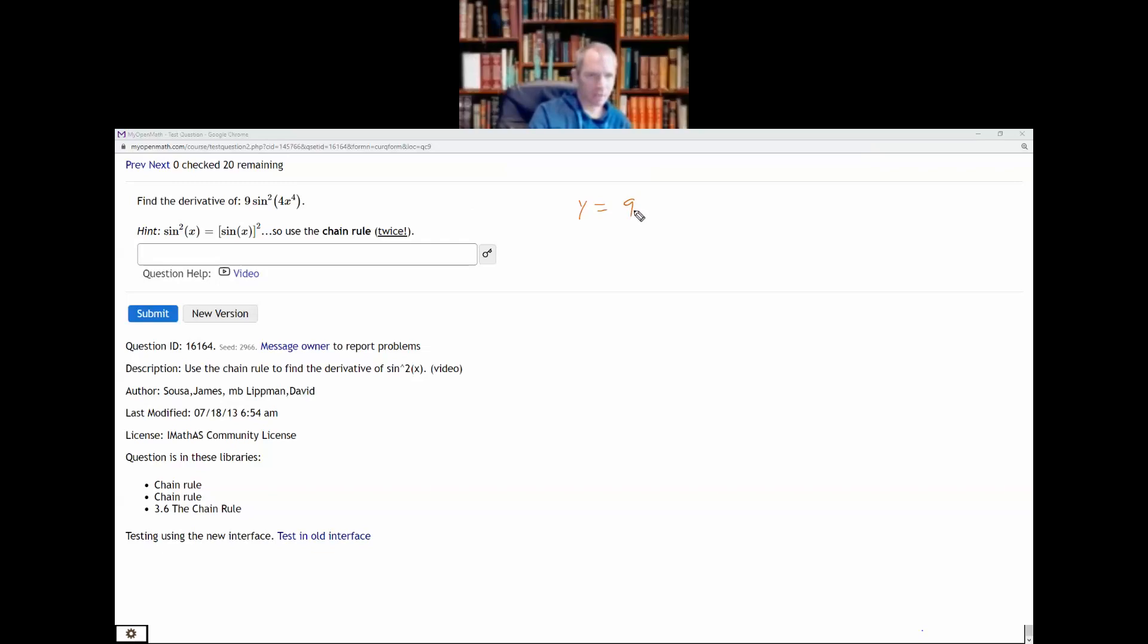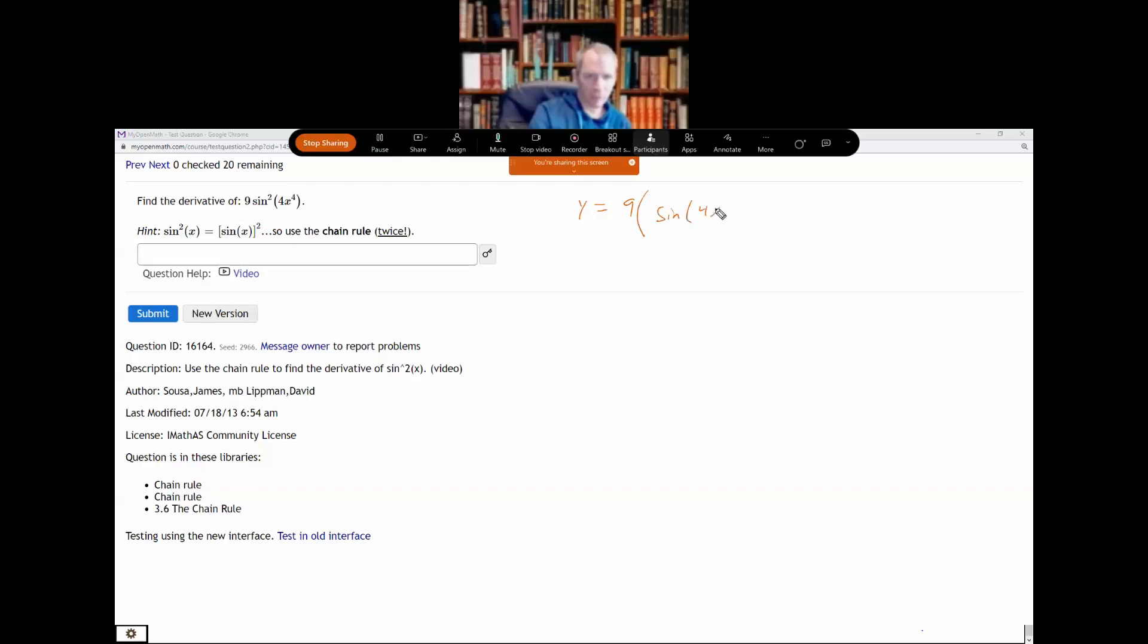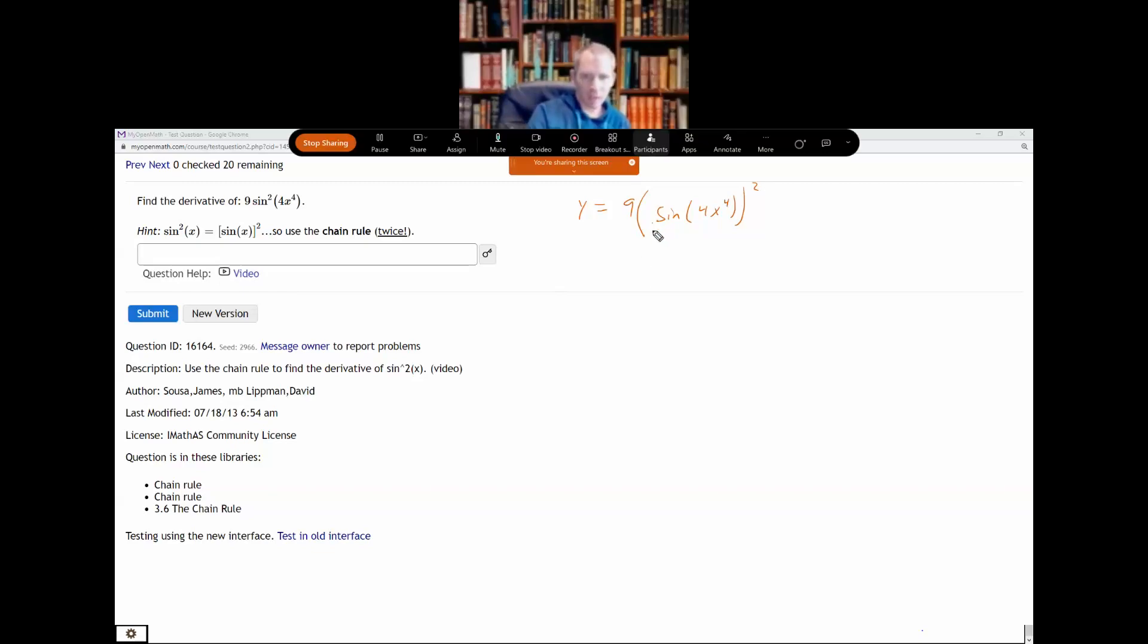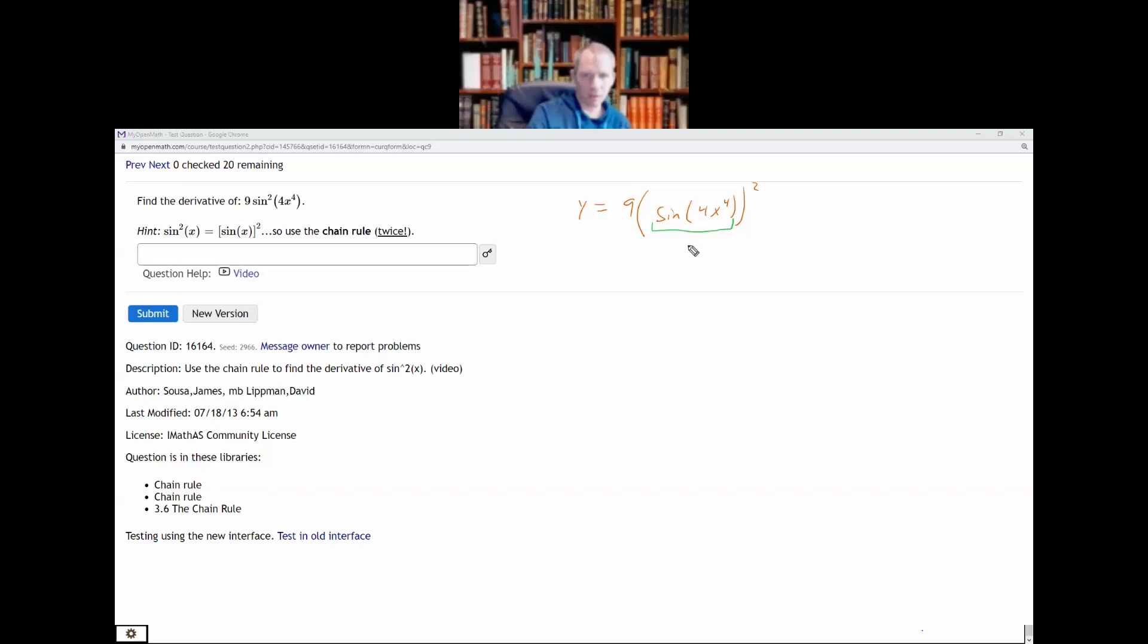Sine squared means take that sine function and square it so I'm going to have the sine of 4x to the fourth that is then squared. So I think it's a good idea to write it with the parentheses as opposed to writing it as sine squared. So now when I want to go use my chain rule I have to identify an inside function and this sine of 4x to the fourth is the inside function.